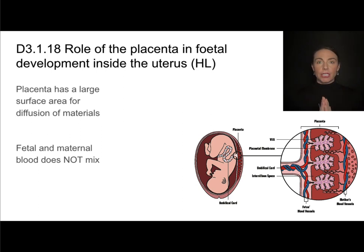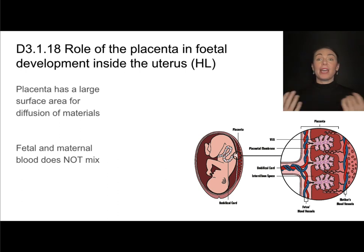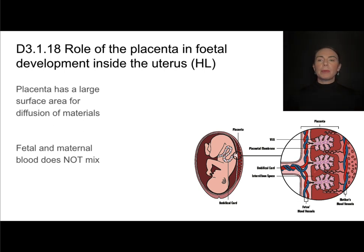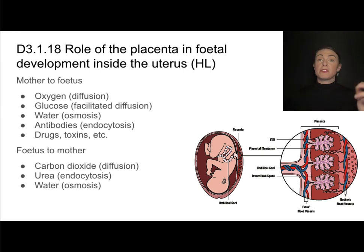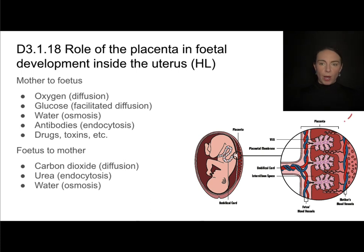It is essential to understand that fetal blood and maternal blood do not mix — a fetus and mother may have different blood types. Materials from the mother's blood diffuse through the villi into the fetal blood based on differences in solute concentration. From mother to fetus: oxygen moves via regular diffusion, glucose via passive facilitated diffusion, water via osmosis, and antibodies can be passed through the placenta via active transport in the form of endocytosis.